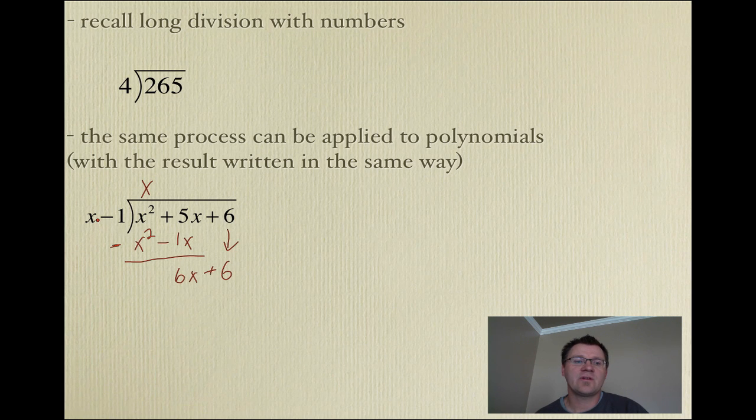Now, we ask ourselves the same question. We say, what do I have to multiply x by to get 6x? And hopefully, you understand that the answer there is 6. 6 times x is 6x. 6 times negative 1 is negative 6. Again, we subtract these two things. So, I get 6x minus 6x, which is 0. I get 6 minus a negative 6, which gives me a 12.